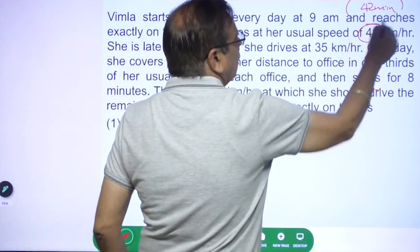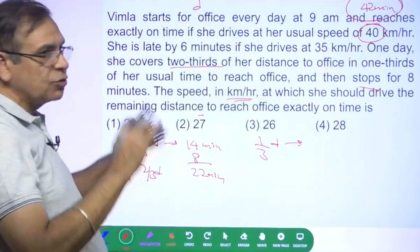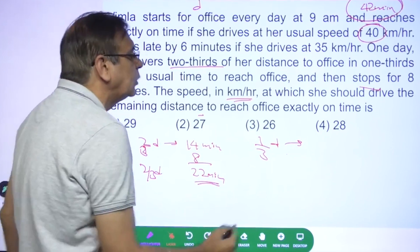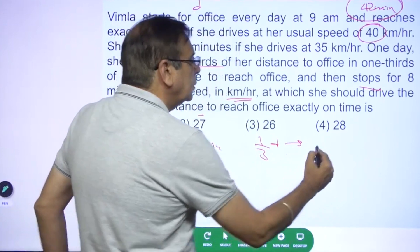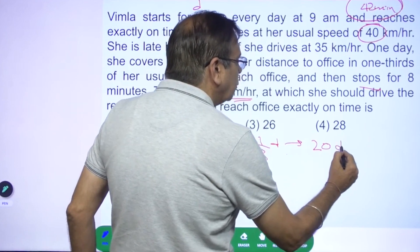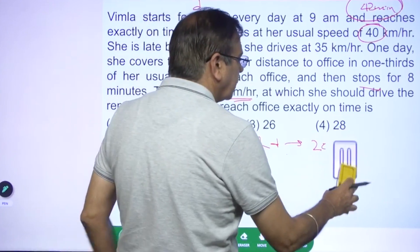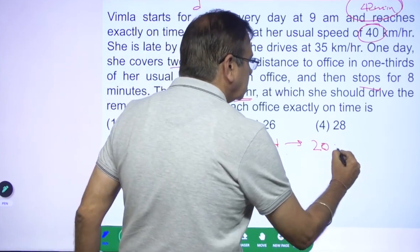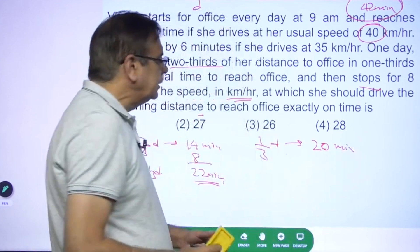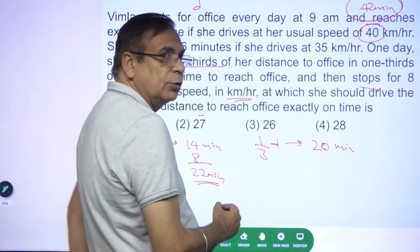Earlier she was taking 42 minutes. At the normal speed she still needs to take 42 minutes. She's already spent 22 minutes. So she has to do the remaining distance in 20 minutes.